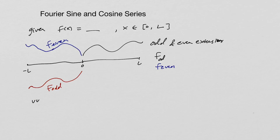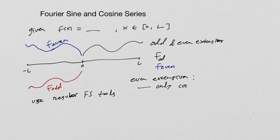Once you have these two extensions, you can use regular Fourier series tools. We learned that for an even extension you get only cosine terms, and if you have an odd extension you get only sine terms.